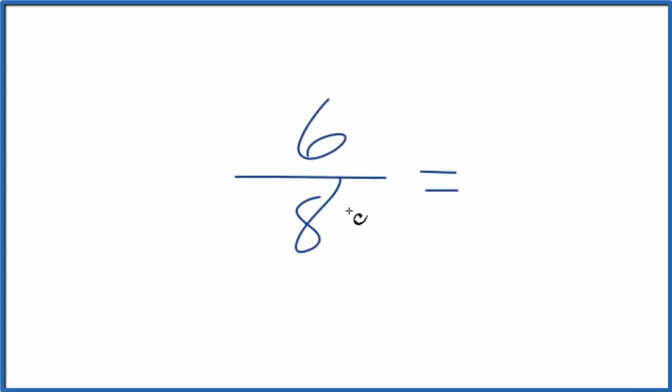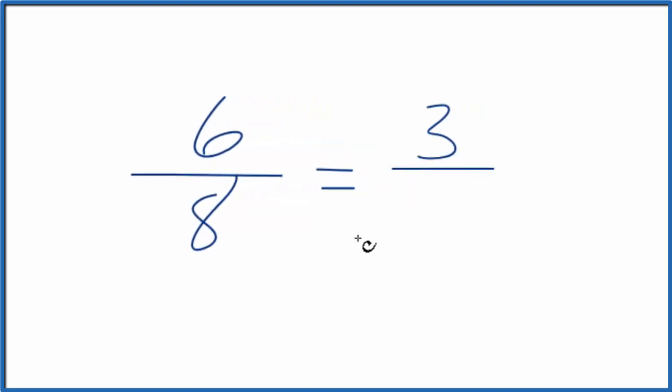Let's write the fraction 6 eighths as a decimal. We should note before we start, we could reduce this or simplify it further, because 2 goes into 6, 2 times 3 is 6, and 2 times 4, that's 8. So we could simplify it.